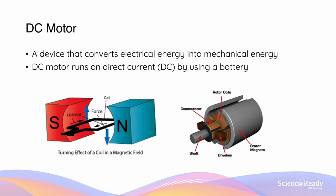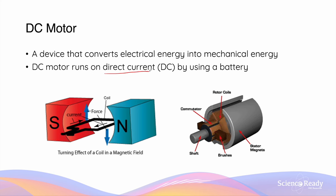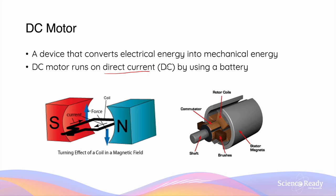In this module, DC motors refer to motors that specifically use a direct current supply. This means the current that flows through the motor only flows in one direction, and this is usually supplied by using a battery.